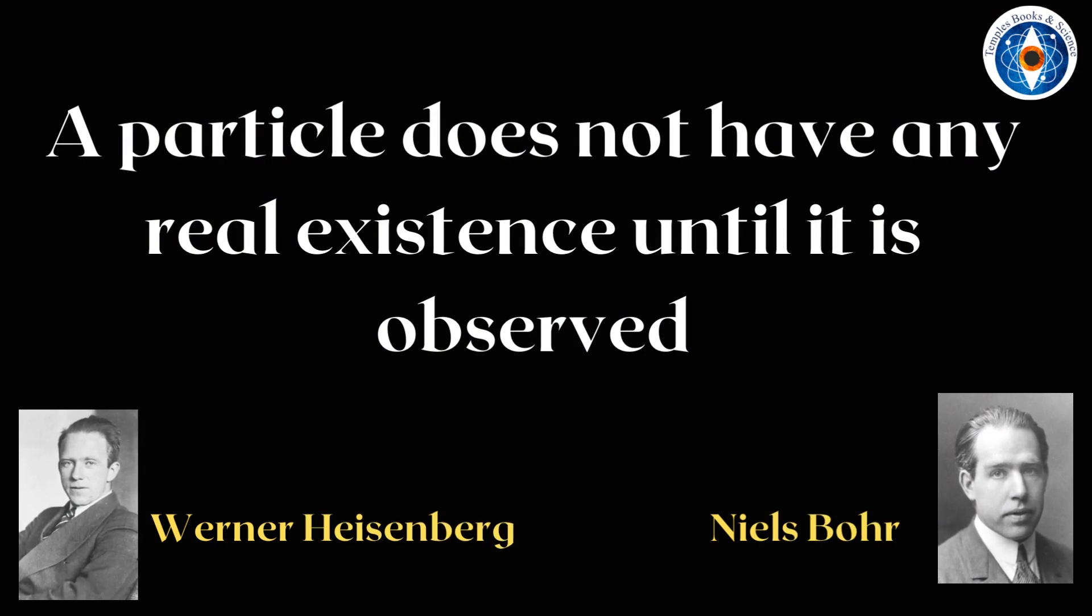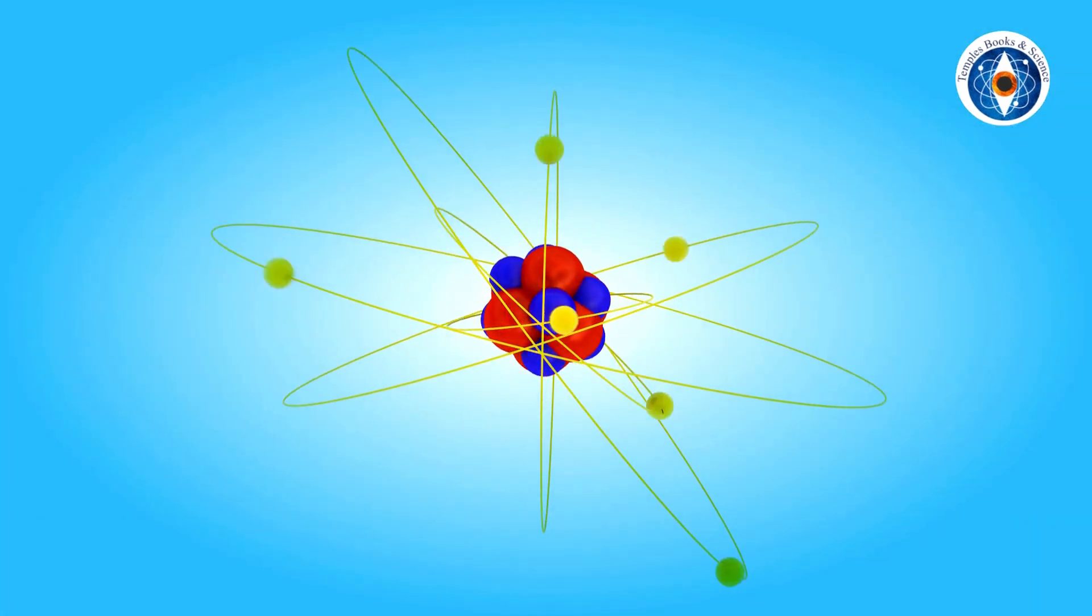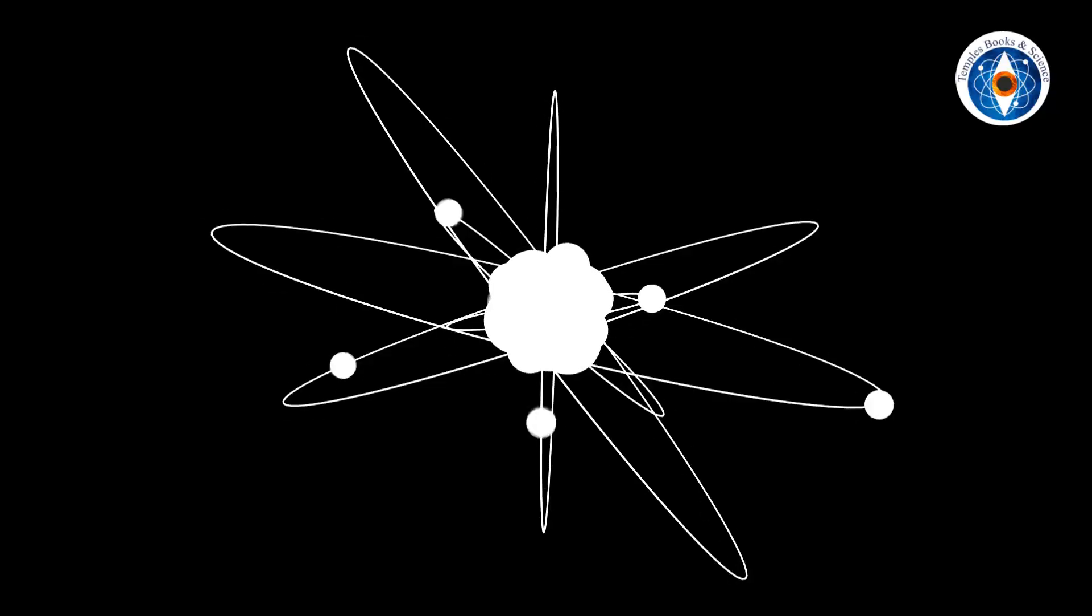In order to understand this, we have to begin with the very first and most consequential finding of quantum physics: particles have no real existence until they are observed. When we imagine an atom, this is the image that pops up in our head. Every particle in this picture has a specific shape and size.